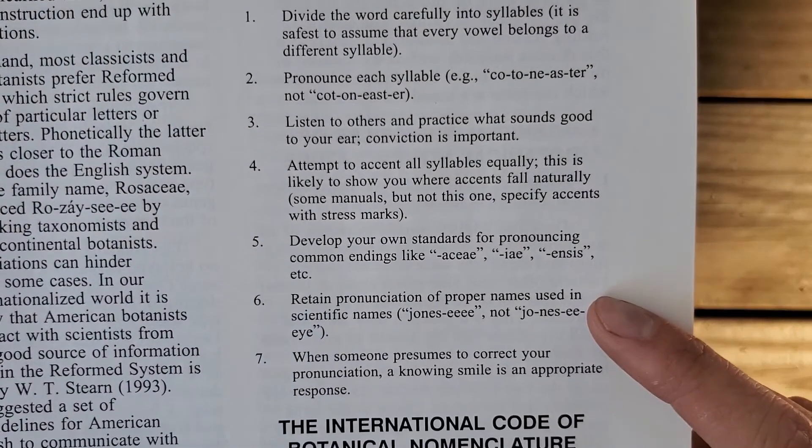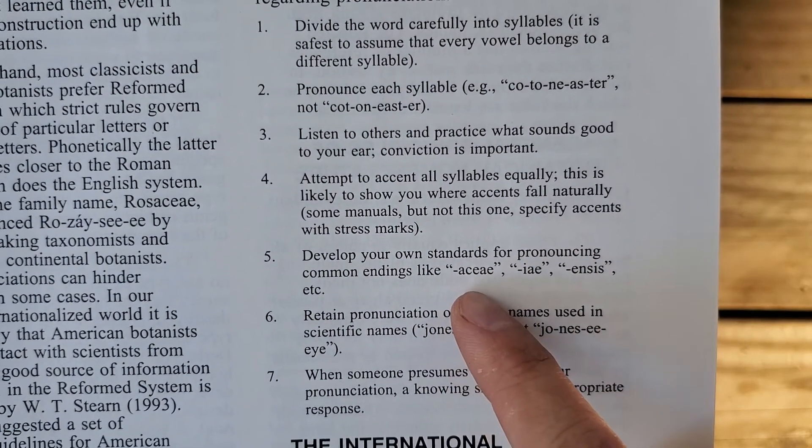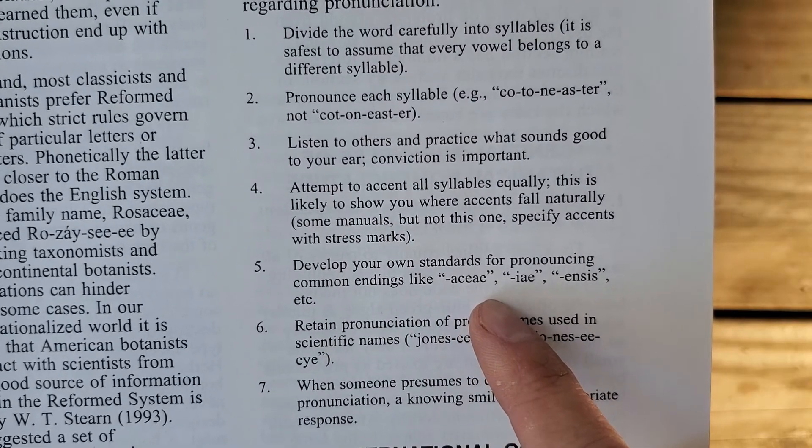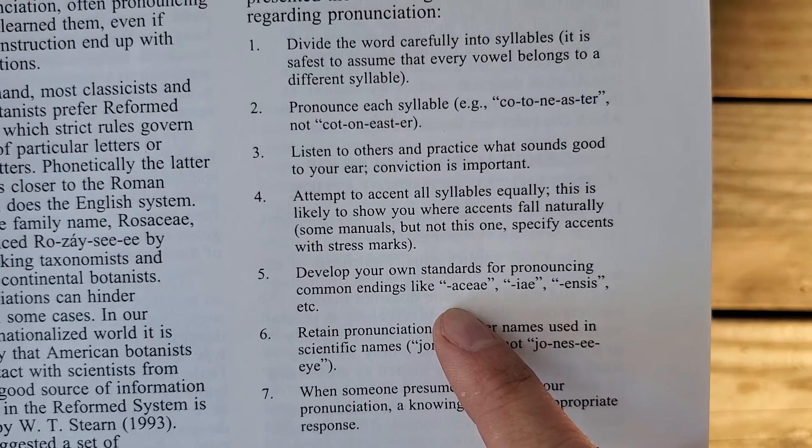Develop your own standards for pronouncing some of these common endings. I've heard this A-C-E-A-E, this is an ending for family. I've heard it pronounced A-C-E or A-C-A, so Aceraceae, Aceraceae.